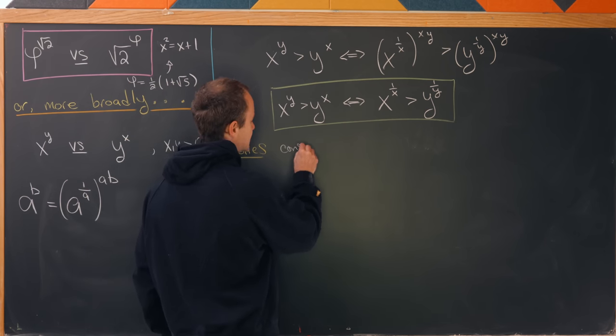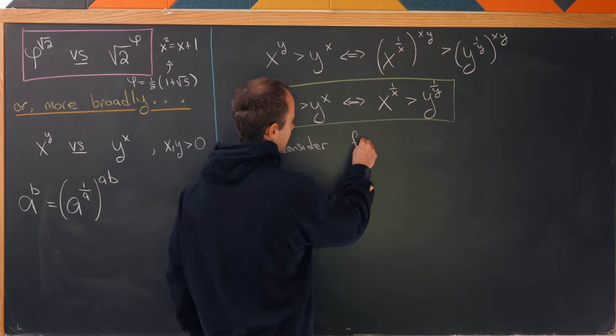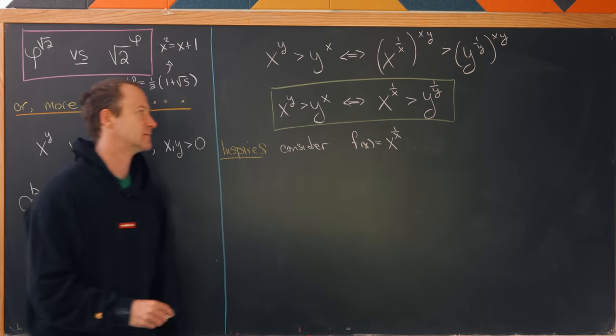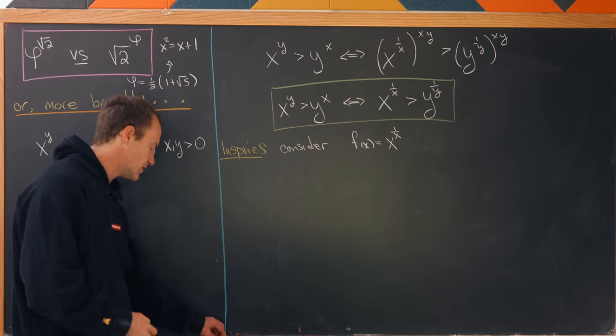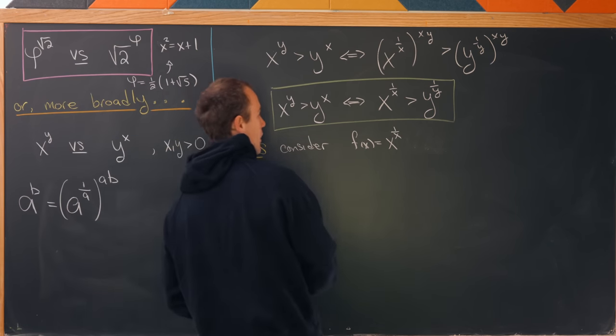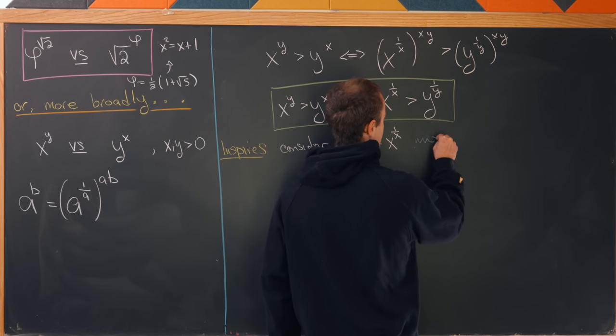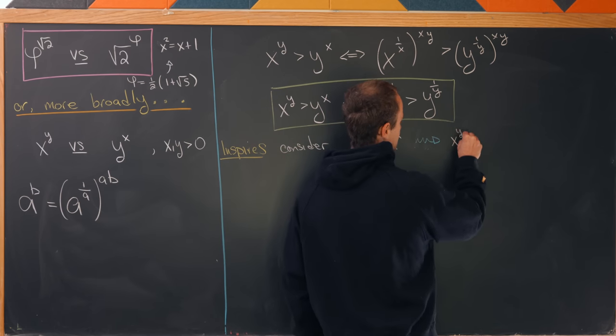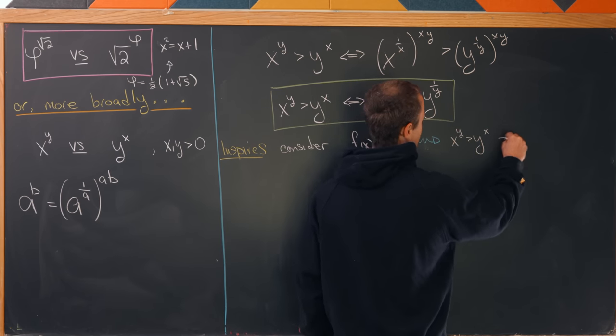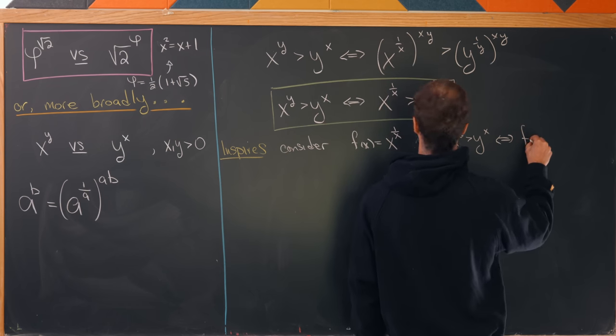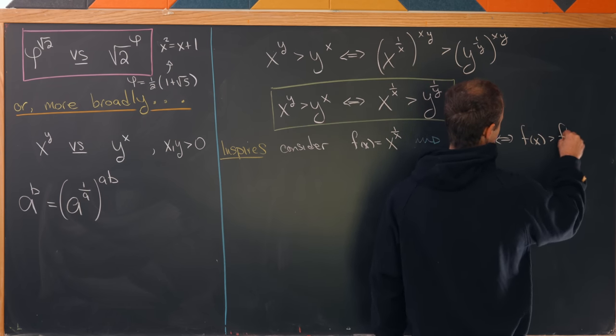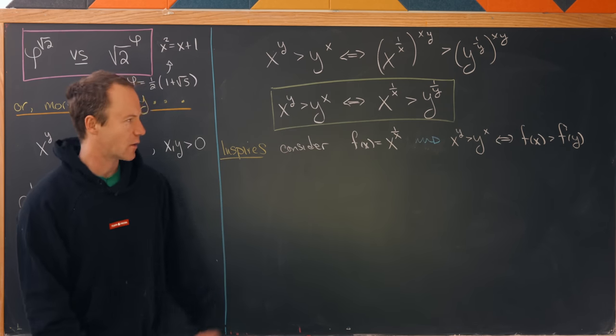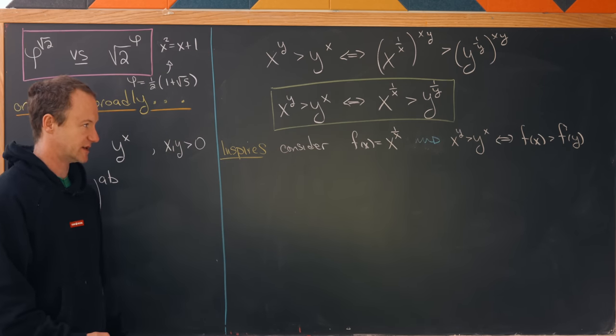Let's consider the function given by I'll call it f of x and it will be x to the 1 over x. And notice that this inequality can be rewritten in the following form. We have x to the y is bigger than y to the x if and only if f of x is bigger than f of y. So we've put our goal inequality into this functional inequality setup.